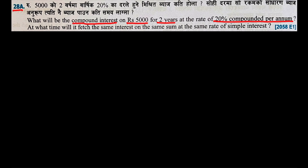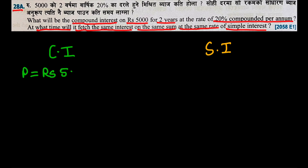The second part asks: at what time will it fetch the same interest on the same sum at the same rate of simple interest? So we have two parts — compound interest and simple interest. The given information is: principal = Rs.5000, time period = 2 years, rate = 20% per annum.